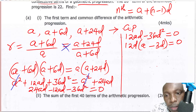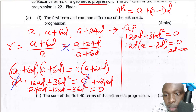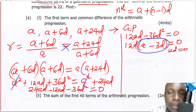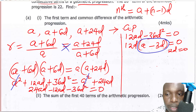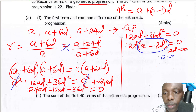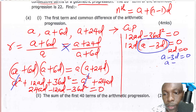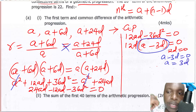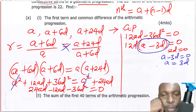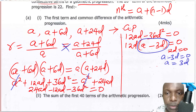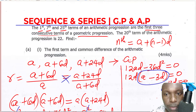When two numbers multiply to give zero, either 12D equals zero or A minus 3D equals zero. The important result is A minus 3D equals zero, which gives us A equals 3D.